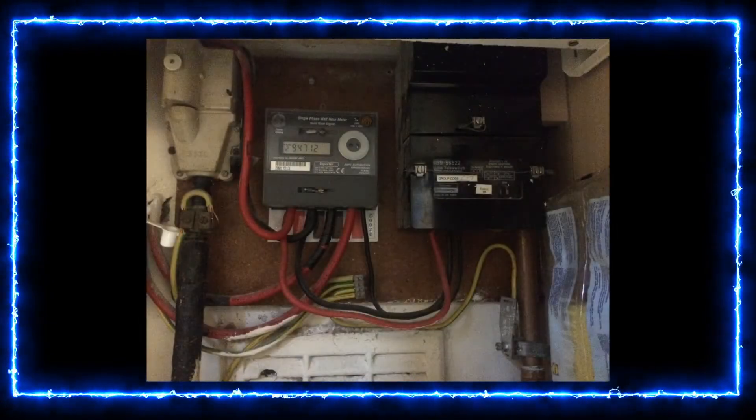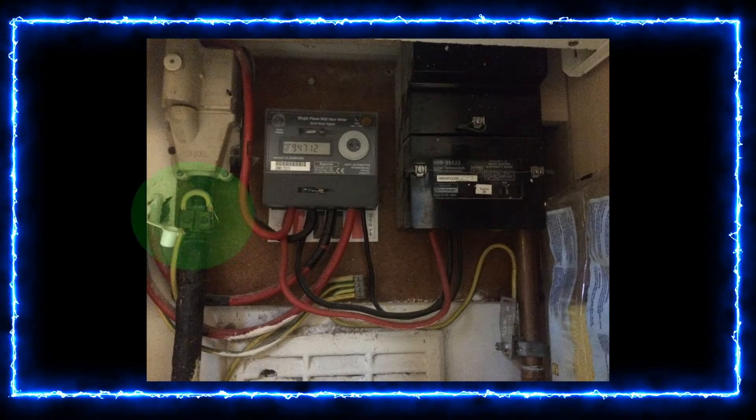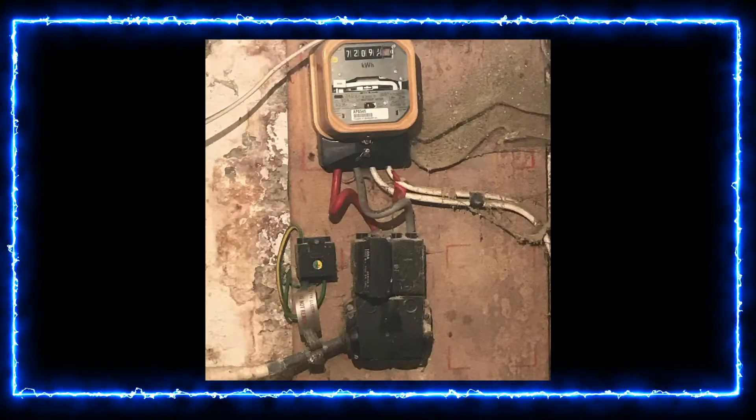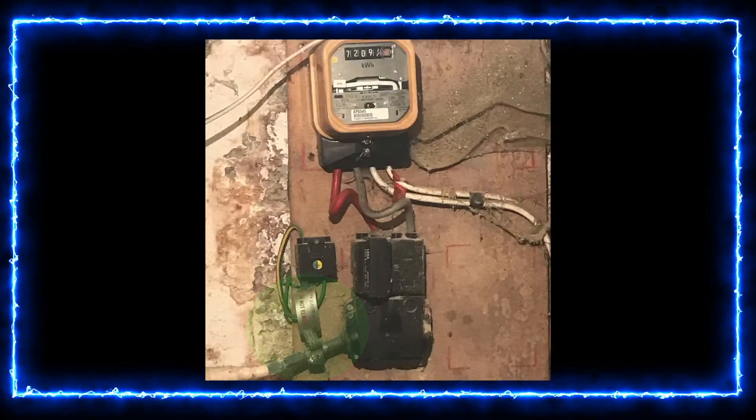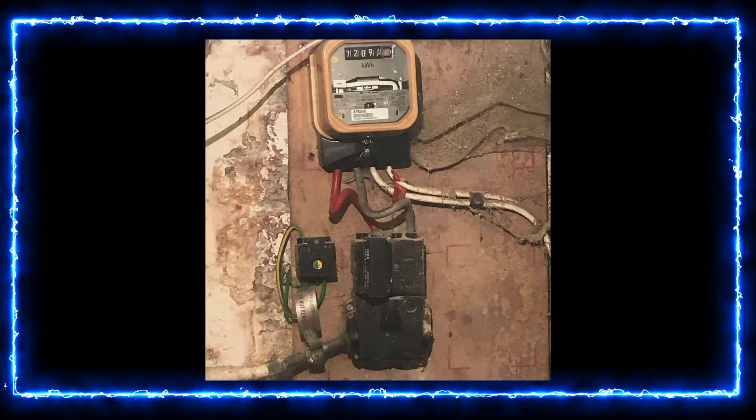Here's a few examples. You can see that the earth cable, the green and yellow cable, connects directly onto the sheathing of the supply cable. This is what you're looking for when identifying a client's earthing arrangements. Thank you.